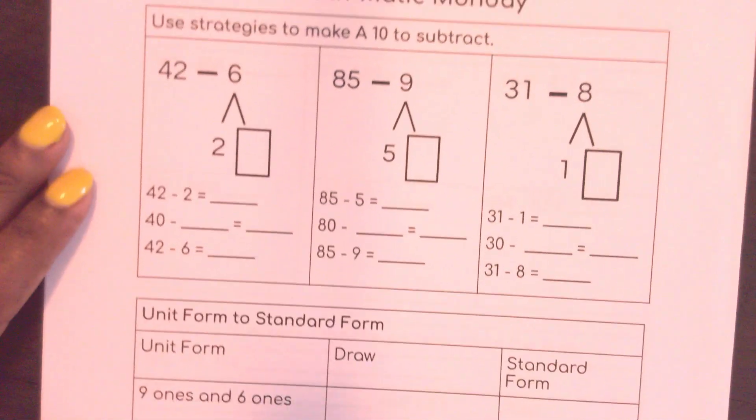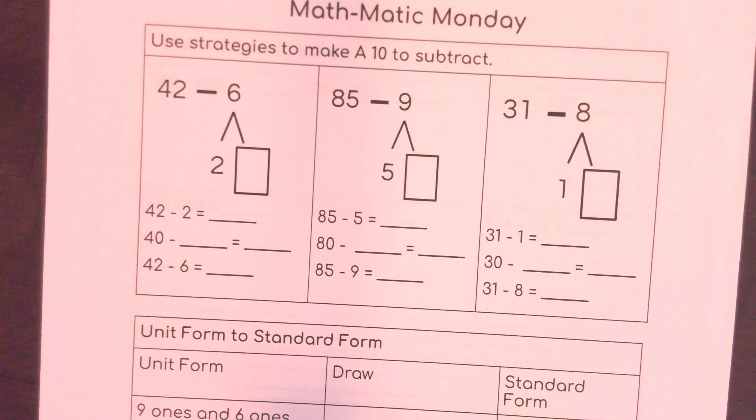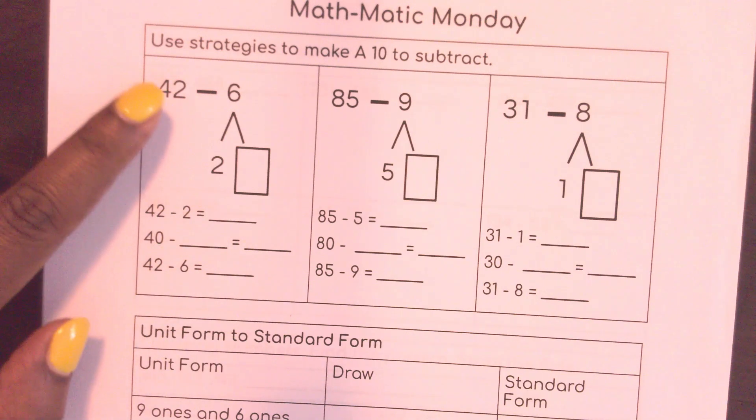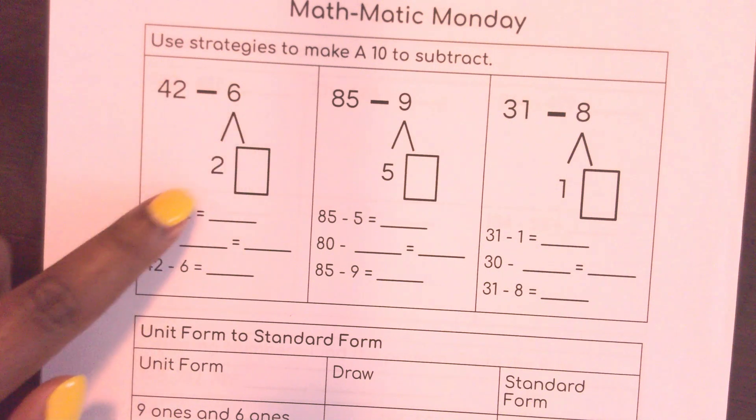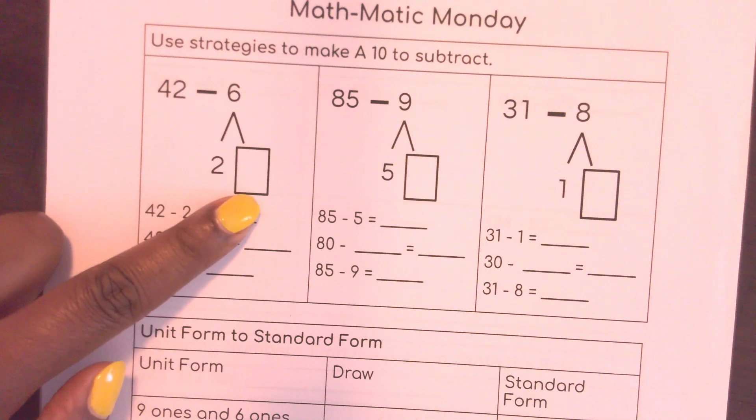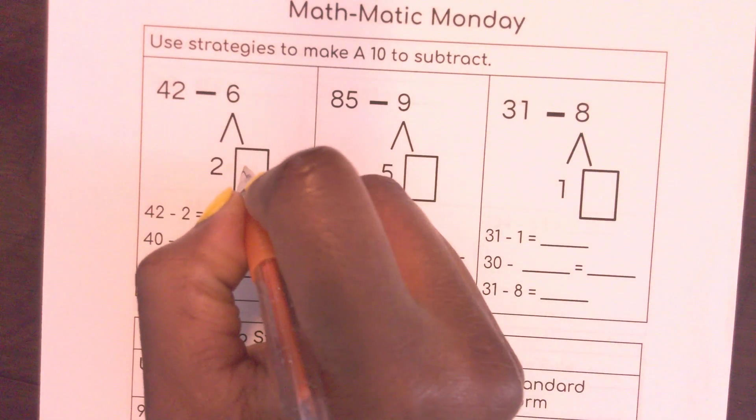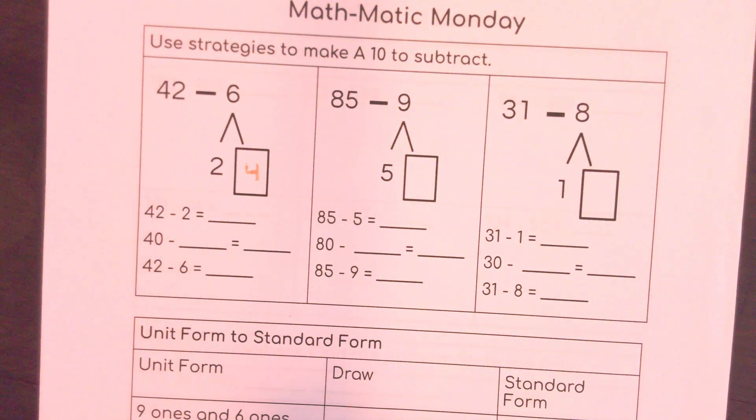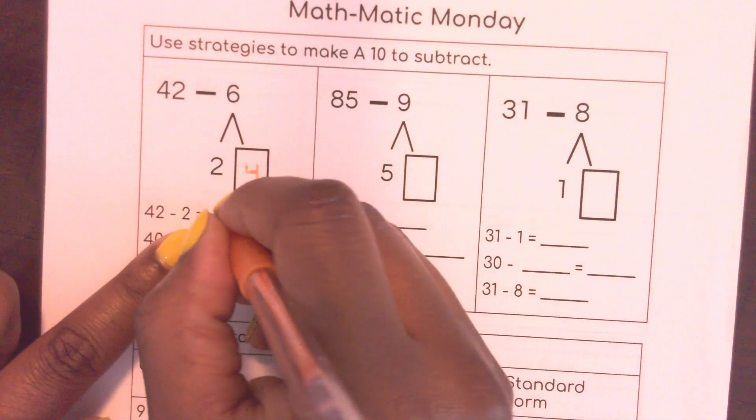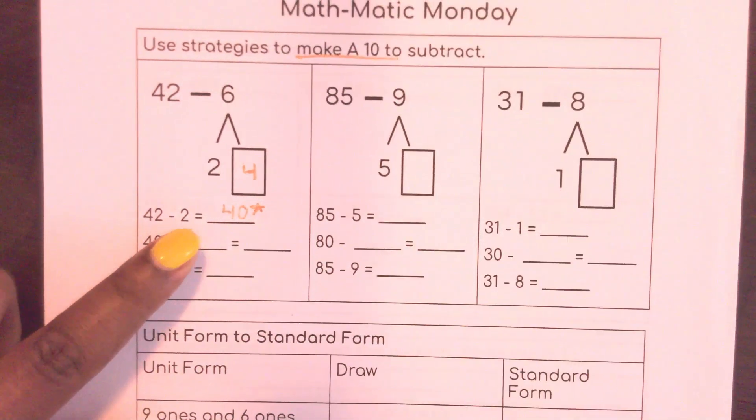So right here at the top, we have 42 and we're subtracting 6. That's something that we can mentally do in our head if we can make a 10. So 42 minus 6, I can break this 6 into 2 and another number. 2 plus what equals 6? 2 plus 4. So down here, this is everything that would be happening in my head. 42 minus 2 would give me 40. That is the 10 I'm making when I make a 10. I was making 40.